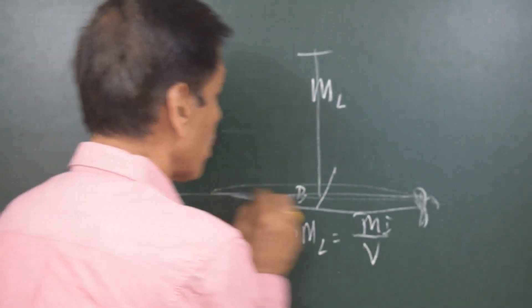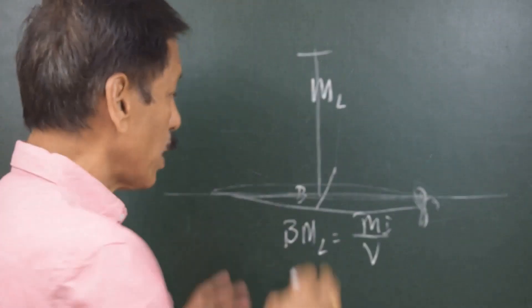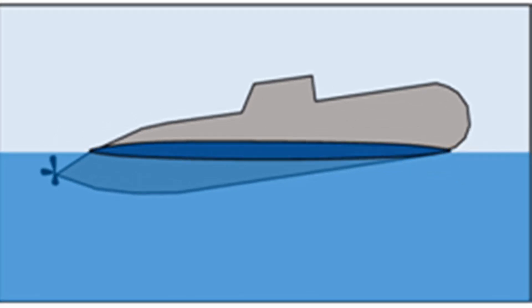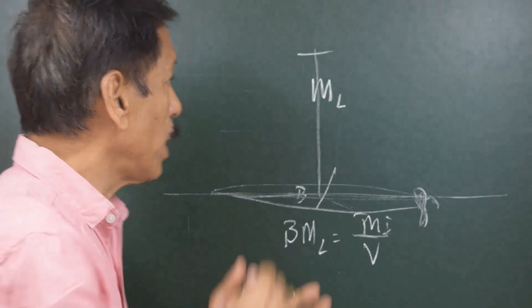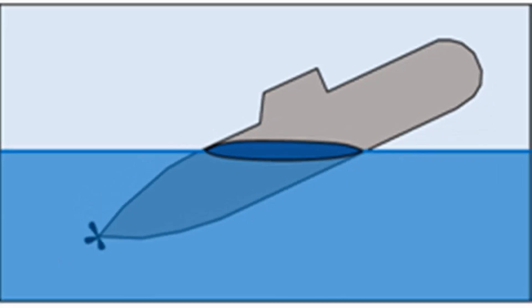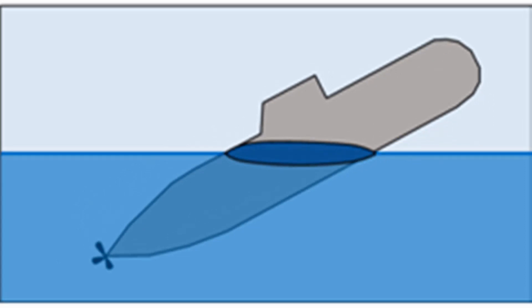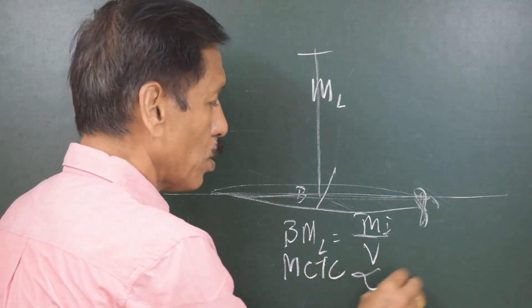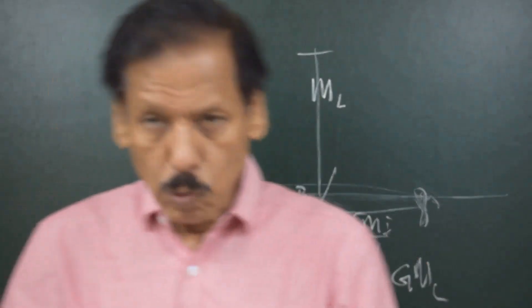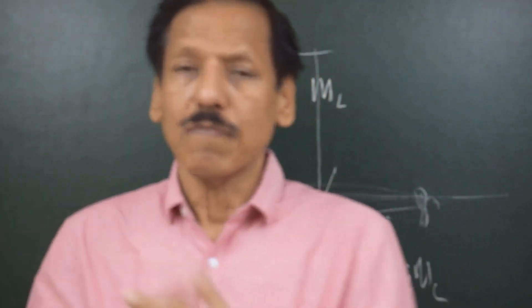We are talking about the submarine at the surface. When the submarine trims, the waterplane area might reduce considerably. And when the waterplane area reduces considerably, the position of ML will come down. GML will also reduce. And when GML reduces, the MCTC — which is proportional to GML — will also reduce. And when MCTC reduces, a small shift of weight will cause considerable trimming of the submarine, which means the submarine is very weight sensitive.